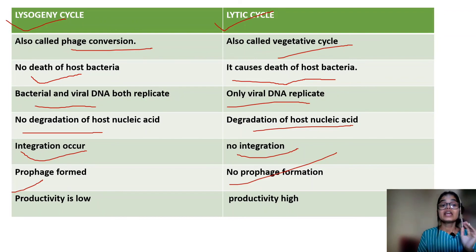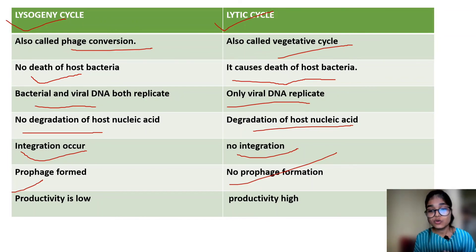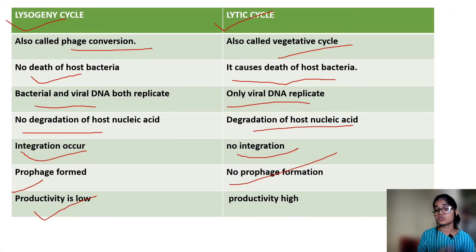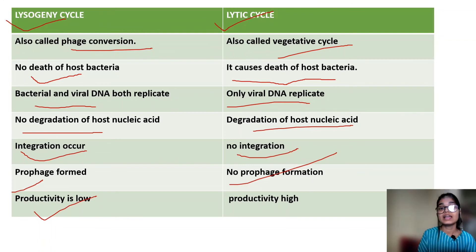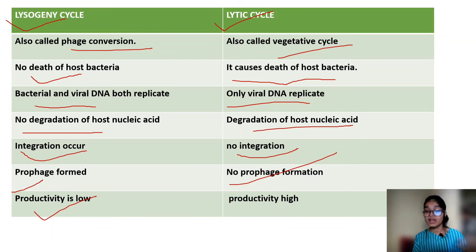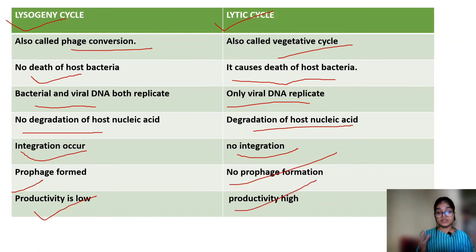The lysogeny cycle has low productivity and can produce very little viral particles. But the lytic cycle is so dangerous — it has a lot of productivity and produces many viral particles.